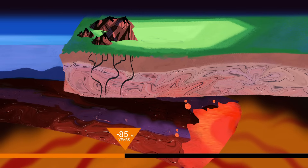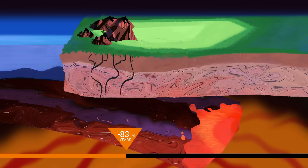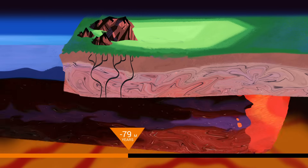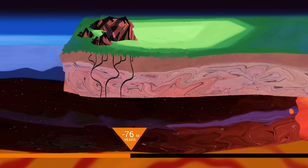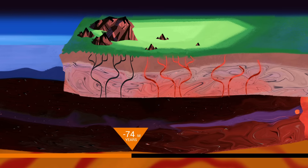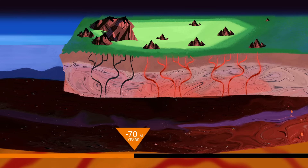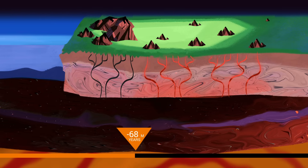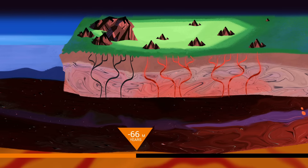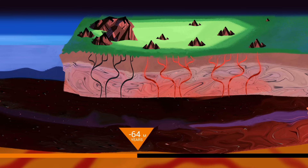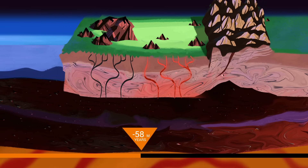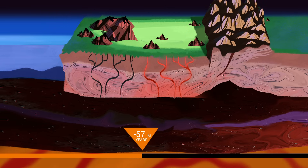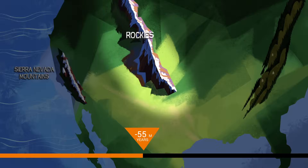Now it's 85 million years ago. The Farallon plate becomes less steep, causing volcanism to stretch eastward and eventually cease. As the Farallon plate subducts, it compresses North America, thrusting up mountain ranges like the Rockies, which extend over 3,000 miles.